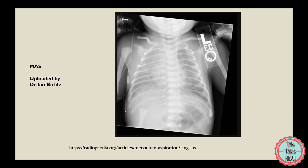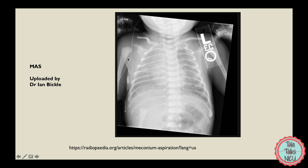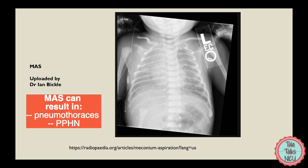Looking at another chest x-ray with MAS — again here you see patchy infiltrates all over. This area seems to be more collapsed and the left side especially down here seems to be more aerated. Also, the meconium itself can really irritate the lungs and cause a chemical pneumonitis, so sometimes you have just overall haziness from that. In neither of the last two x-rays can you see a pneumothorax, and obviously you can't tell if PPHN has developed just from looking at x-rays — that's more of a clinical diagnosis. Pneumothorax and PPHN are the two things we really worry about in MAS.